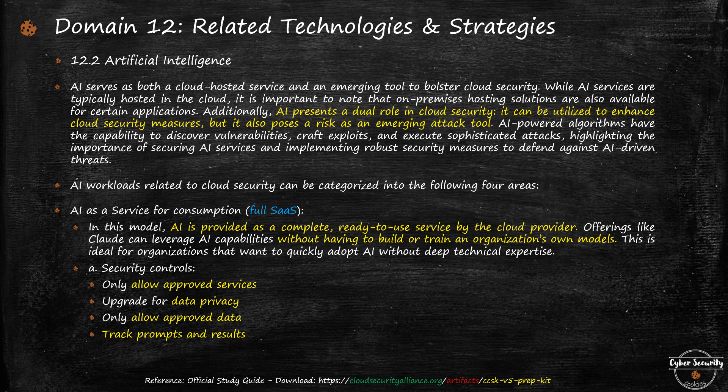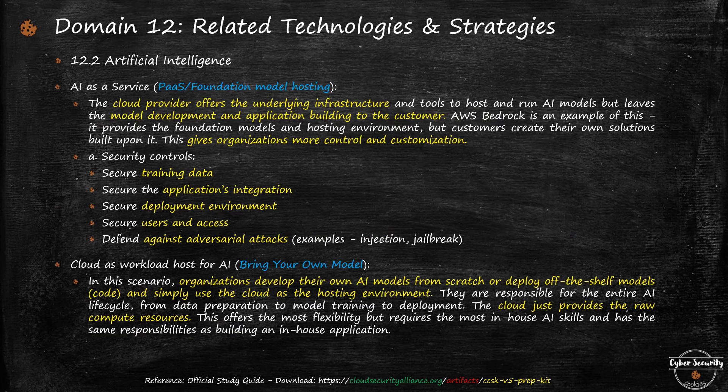There are four categories of AI workloads in cloud security. First is AI as a Service in a full SaaS model — AI is provided as a complete, ready-to-use service by the cloud provider, which has already trained and built models for you to use. Controls include allowing only approved services, ensuring data privacy, allowing approved data, and tracking prompts and results. It is a full service provided by the cloud service provider.